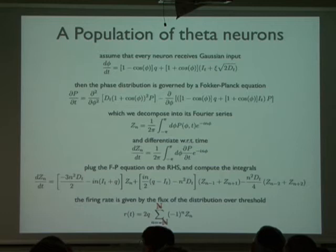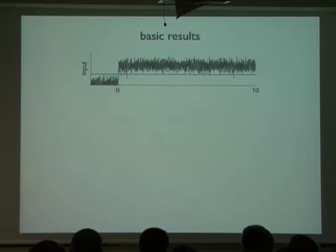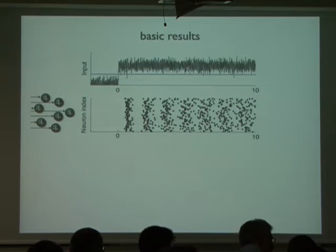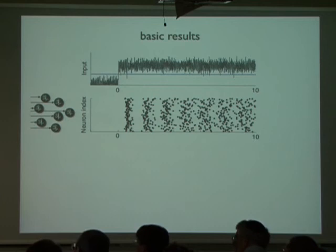So does it work? Let's consider first a simple case — the example I showed before, where we have Gaussian input that at some time has a discontinuity in the mean. The population of theta neurons, each receiving different instantiations of this Gaussian input, will have some ringing dynamics as they approach steady state.